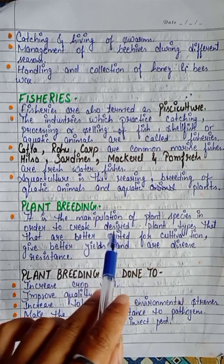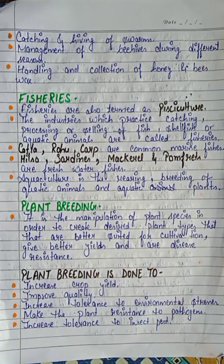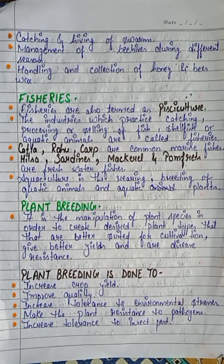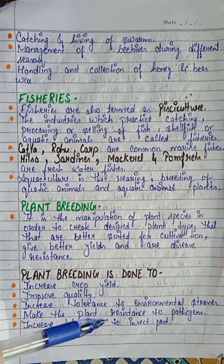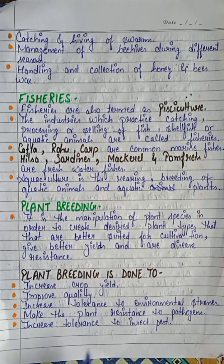Plant breeding — what is plant breeding? We can create a desired plant type which is suitable for cultivation, can show good yield, and has disease resistance. Why do we do plant breeding? First, to increase crop yield. Second, to improve quality. Third, to increase tolerance to environmental stresses so that the crop can tolerate environmental stress. Fourth, to make the plant resistant to pathogens. Fifth, to make the plant tolerant to insect pests.